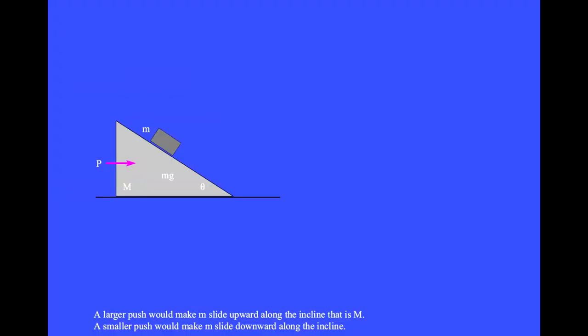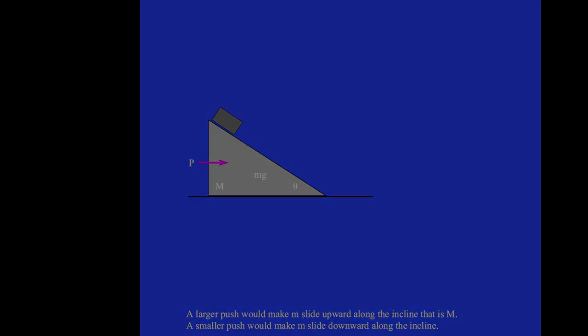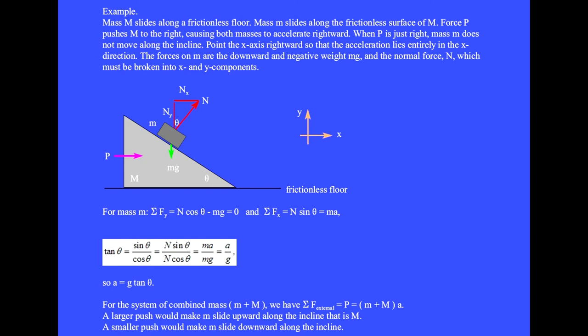A larger push would make m slide upward along the incline. A smaller push would make m slide downward along the incline. Let's write F equals ma for the case when P is just right and mass m does not move along the incline.